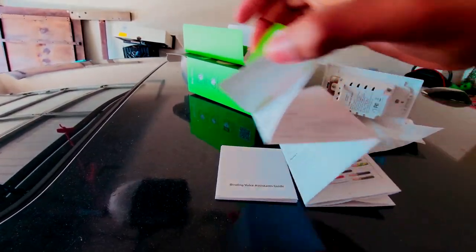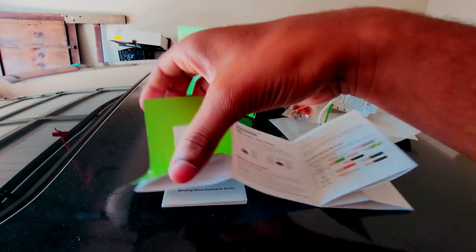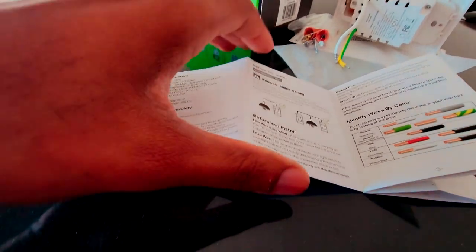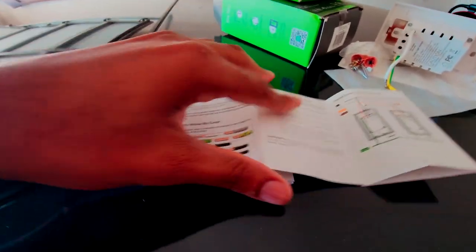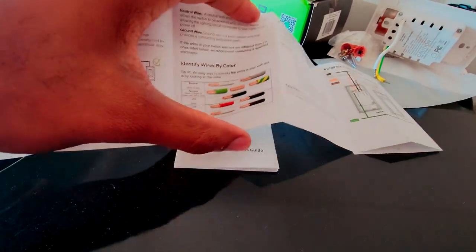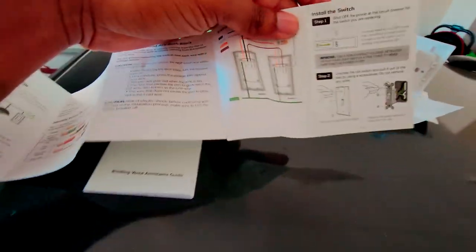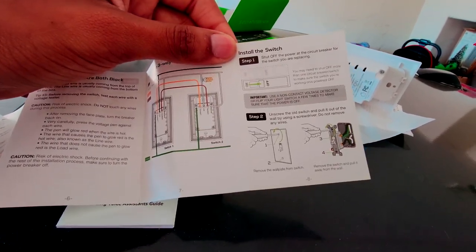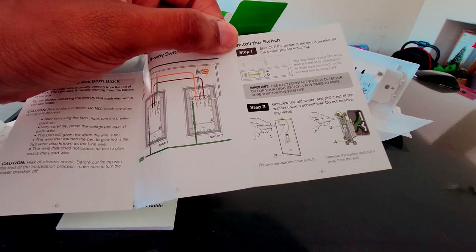Opening up the guide for the switch. Not much, just explaining to you what the color means on the wires, which wire does what, and then we have the actual steps. Obviously flip your breaker, test it out to make sure it's actually off.